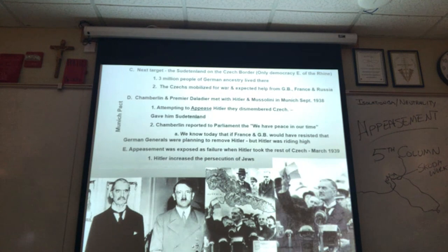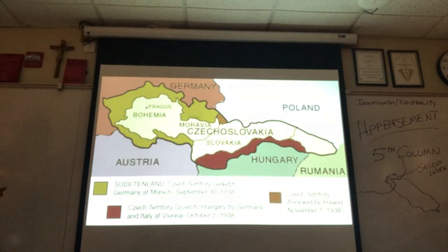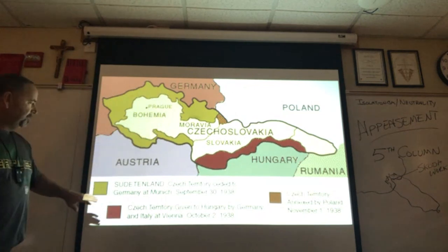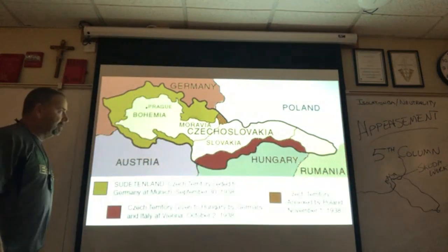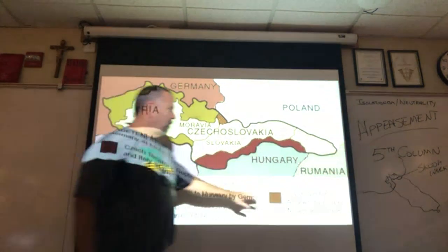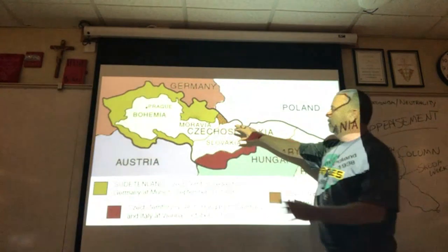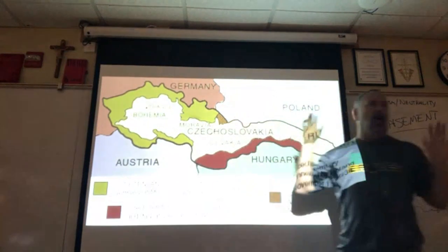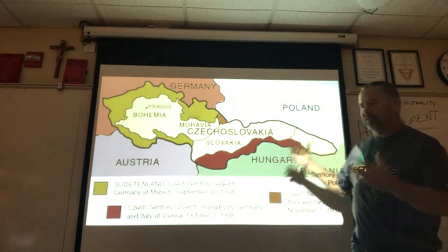He has his faults, as all men do. This map shows what happened to Czechoslovakia — carved up. There's the Sudetenland, Czech territory ceded to Hungary, and the Poles annexed a portion out of fear — before Germany took the rest — to arm it for their own defense. You can see it's carved up.